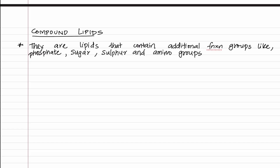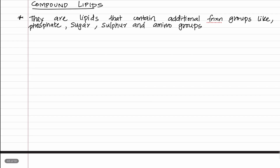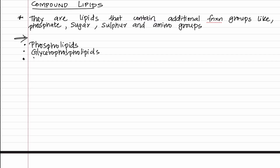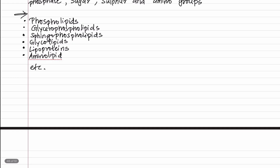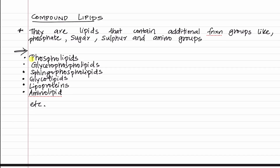Compound lipids can be further divided into different types, including phospholipids, glycerophospholipids, sphingophospholipids, glycolipids, lipoproteins, amino lipids, etc. These are just a few examples under compound lipids. Among these, we have to mainly focus on phospholipids.